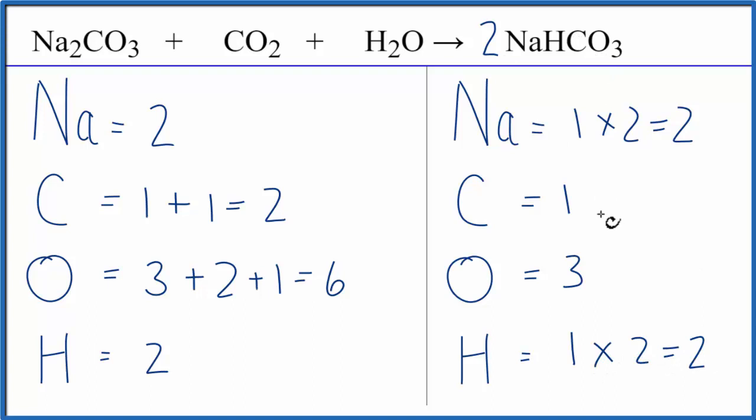Carbons, one times two, they're balanced. And then oxygens, three times two, gives us six, and we're done. This equation is balanced.